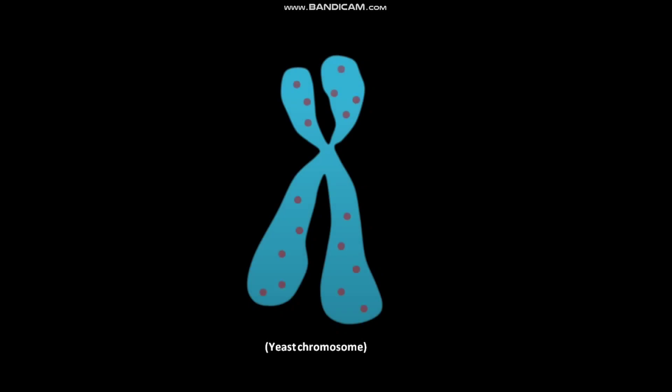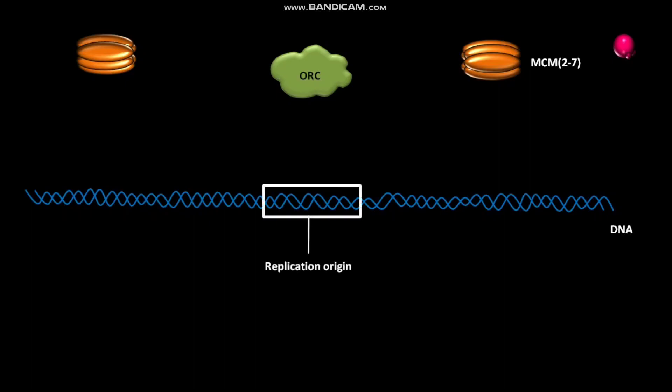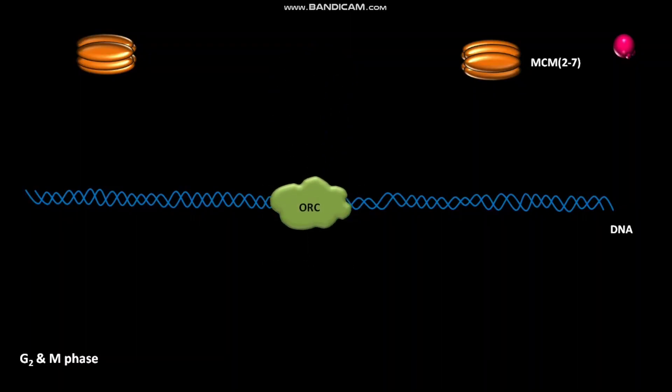Like many eukaryotes, each yeast chromosome has multiple replication origins. Each yeast replication origin contains an 11 base pair conserved core sequence. During G2 and M phase of the cell cycle, a hexameric protein called ORC, or origin recognition complex, binds to the 11 base pair conserved core sequence in the yeast replication origin.